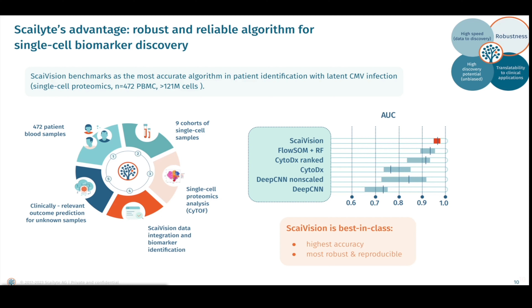If you would like to learn more about this experiment, you can read the detailed white paper linked on our website. It is also important to mention that, thanks to the richness of single cell data and some data augmentations, Skyvision can learn and discover robust differences from as few as 10 to 15 patients per cohort, which is a rather unique feature for an AI-based approach.